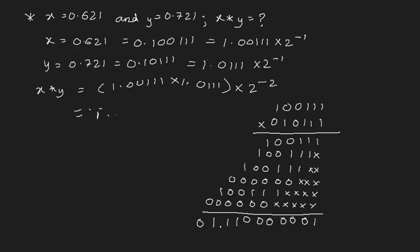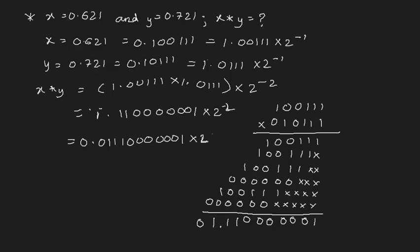So finally we end up with 1.1100000001 × 2^(-2). Now let's get rid of the 2^(-2) and make it 2^0. We multiply by 2^2 by shifting the decimal two places to the left, giving us 0.011100000001 × 2^0.